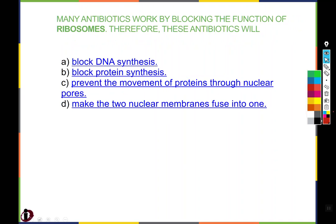Many antibiotics work by blocking the function of ribosomes. Therefore these antibiotics will: A, block DNA synthesis — that's not what ribosomes do. B, block protein synthesis — that's a candidate. C, prevent the movement of proteins through the nuclear pores — we haven't really talked about that level of regulation, so that's probably out. D, make two nuclear membranes fuse into one — this is not something that really ever happens; nuclear membranes can divide but they don't tend to fuse. So B, block protein synthesis, is the best answer.